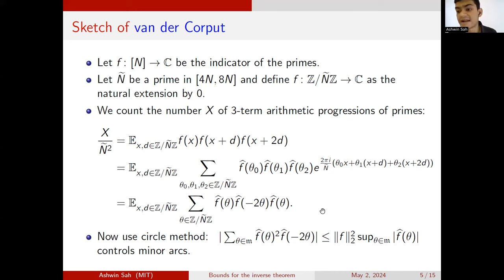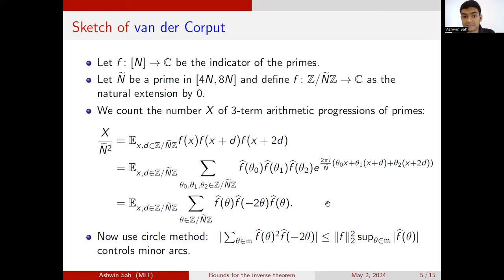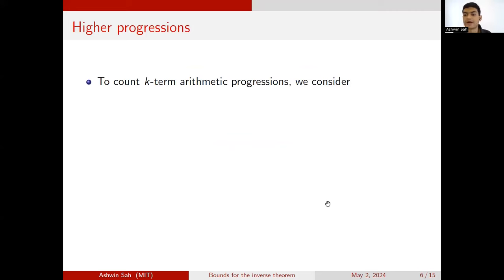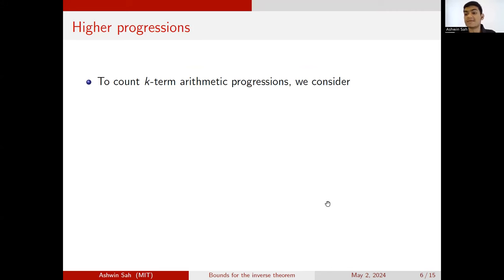Now we use the circle method — we have major arcs and minor arcs. The minor arcs are values of theta for which the Fourier coefficient is small. I have this sum with an L2 term and a remaining term bounded by the L-infinity, getting an inequality using Parseval to go from the L2 norm of f-hat to the L2 norm of f. This lets you establish that the minor arcs correspond to some error term, and then you compute and add up the contribution from the major arcs.